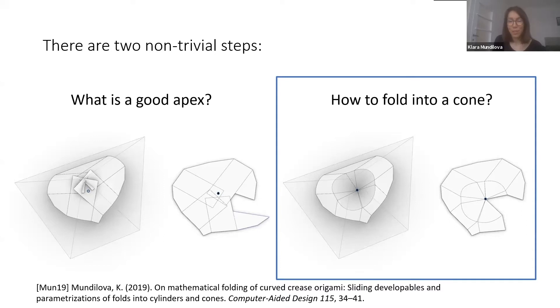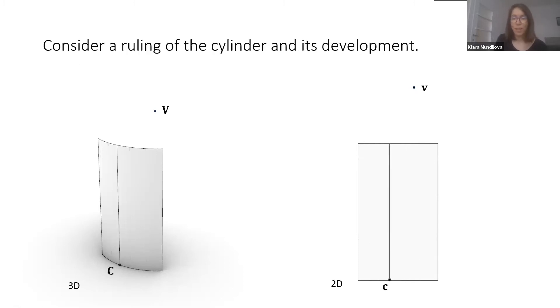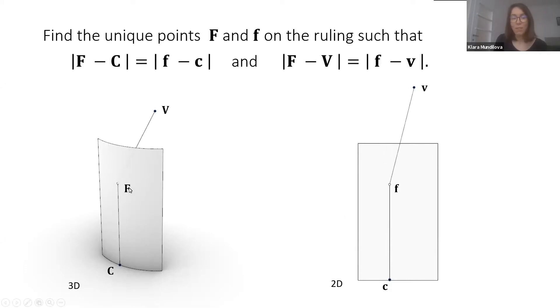I would like to start with the second question. For this one, we applied methods described in a paper about mathematical methods for origami. We consider a cylinder and its development. This is the 3D cylinder, and this would be its development. We have a 3D apex position and a 2D apex position. Then for each ruling in 3D and the corresponding ruling in 2D, we find a point F that satisfies certain distance constraints.